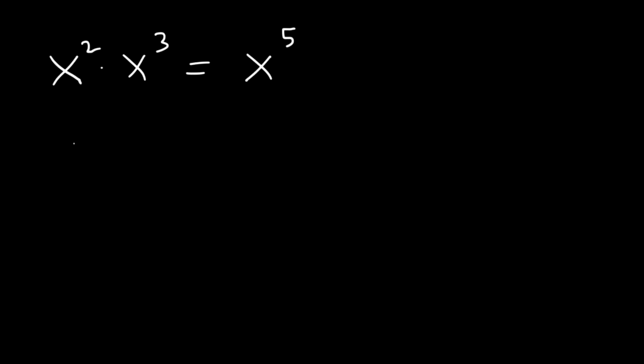Now what if we have x to the 7 divided by x squared? If you're dividing you need to subtract the exponents. 7 minus 2 is 5. This is known as the quotient rule.